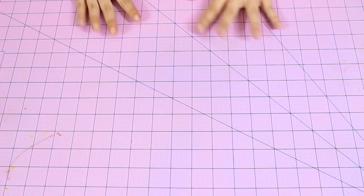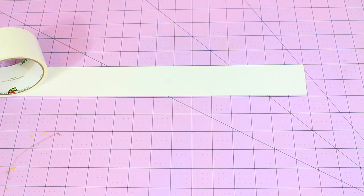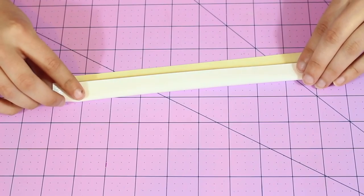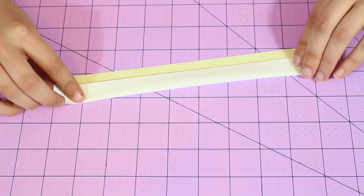So the first thing we're going to be doing is starting on the bottom of our basket. So I am taking my white duct tape and I'm cutting out a strip that is 9 and 1/4 inches long. Now I'm just folding this over onto itself.